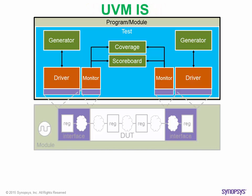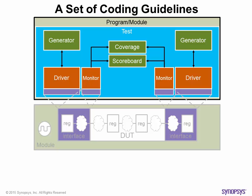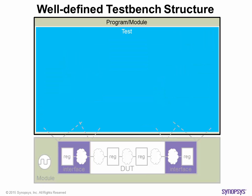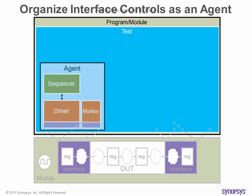UVM is focused on helping you put together a functional verification environment with a set of coding guidelines. UVM calls for a well-defined test bench structure. For example, an agent in UVM is defined to be a collection of three components: sequencer, where stimulus generation is started; driver, for actively driving the RTL signals; and monitor, for passively observing the activity of an interface and reconstructing the observed transaction to pass on to scoreboard and coverage.